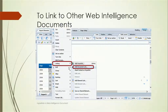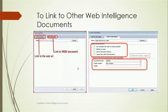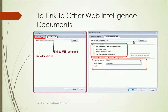In web viewing mode in the BI Launch Pad, right-clicking on a report element shows a Linking option with an 'Add Document Link' option. Clicking it opens the hyperlink page with two tabs: 'Link to Web Page' and 'Link to Document.' In the first tab, specify a URL such as http://. In the second tab, 'Link to Document,' you can browse and select any document you want to link, then specify the hyperlink properties.